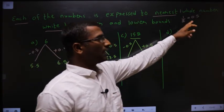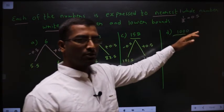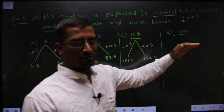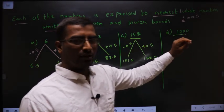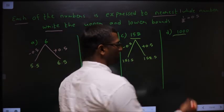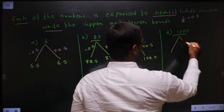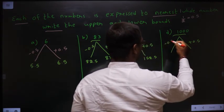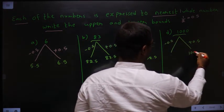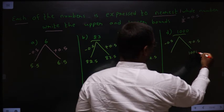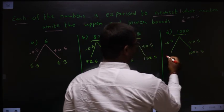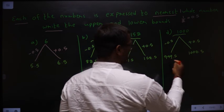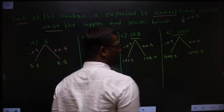Even 1000 is also to the nearest whole number. So what should you add and subtract? It is nearest to whatever, you should do half. So when we do half we get 0.5. So add 0.5 and subtract 0.5. So here I get 1000.5 and here I get 999.5. So this is the lower bound and this is the upper bound.